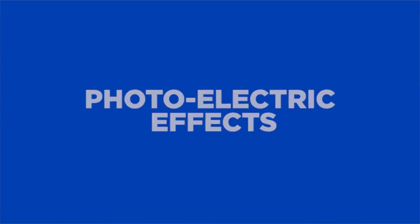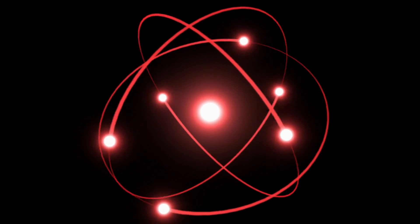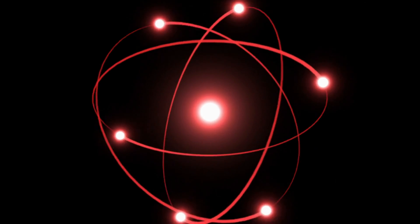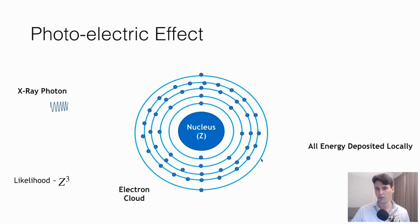We're going to go through this pictorially. If we remember, you have the nucleus, and that nucleus has an atomic number Z — how many protons are in that nucleus. And then you have an electron cloud, which is much larger than the nucleus. The nucleus where the protons and neutrons reside takes up a very small fraction of the matter. So you have your X-ray photons coming in, and in this case those X-ray photons are going to be interacting with an inner shell electron, close to the nucleus.